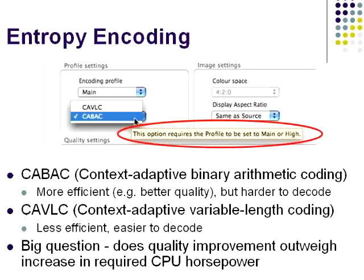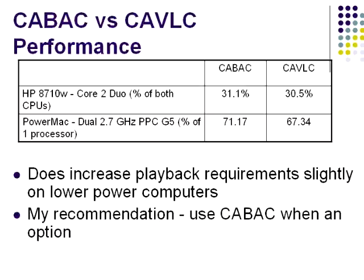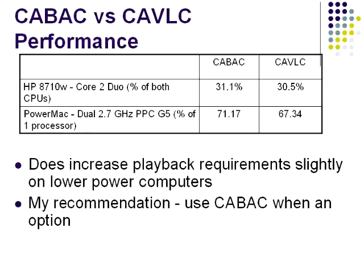The final H.264 encoding option I'll address is entropy encoding, with two techniques available: CABAC and CAVLC. CABAC creates a higher quality, harder-to-decode stream, while CAVLC offers less quality but lower decode requirements. The big question is whether the quality delivered by CABAC is worth the additional playback requirement. In my test, CABAC delivered noticeably better quality. Most authorities place that quality advantage at between ten and fifteen percent. On the other hand, CABAC isn't that much harder to decode — on a Core 2 Duo laptop it's about one percent harder or less, and on an old G5 Power Mac it's only four percent. I recommend using CABAC whenever it's available, which is when encoding with any profile other than the baseline.